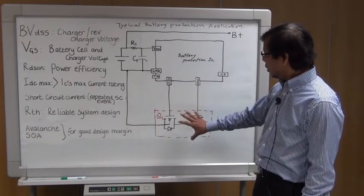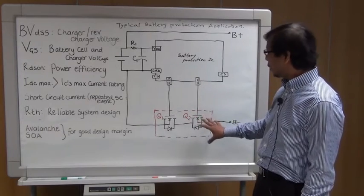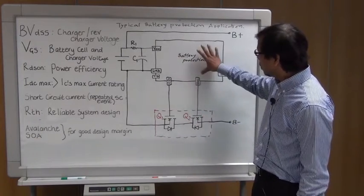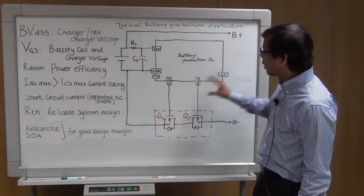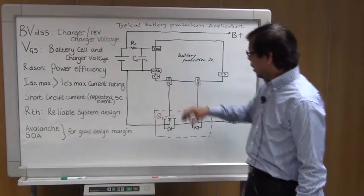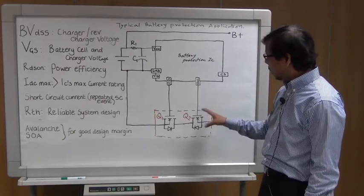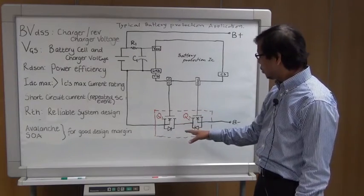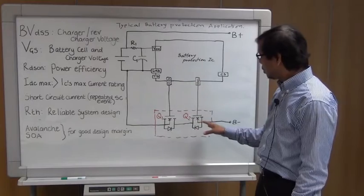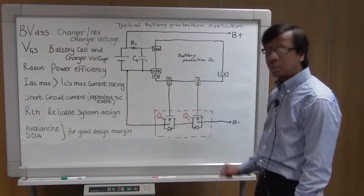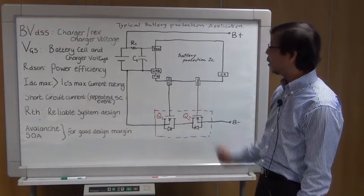Within this selection criteria for the power MOSFETs, as you can see in this application, there's a battery protection IC, the battery, and these two ICs common drain. You can see if you use discrete components, you have two N-channel power MOSFETs back to back.